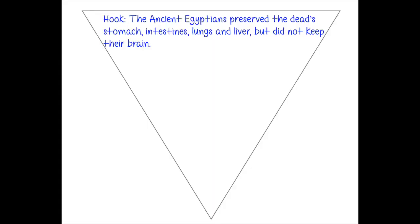In writing my introduction about ancient Egypt, I wrote a hook, a lead-in, background, and I included my thesis statement. In blue is my hook. Since I'm writing about mummification, I tried to find one of the most shocking facts that would get the reader to want to continue reading. I talked about canopic jars and what's in them without actually mentioning the canopic jar, because that's specific information that'll come later.